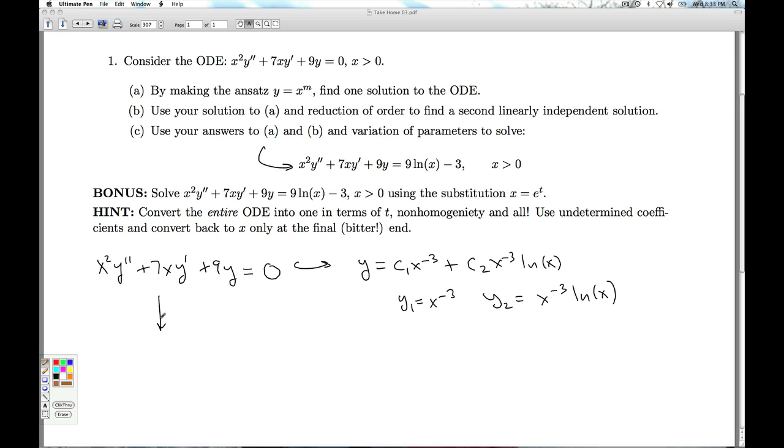The next thing we need to do, and I'm going to write this in red because a lot of people forgot to do it, is we need to divide through by the leading coefficient x squared to put this into normal form: y double prime plus 7 over x, y prime plus 9 over x squared y equals 2. We take that and divide by x squared.